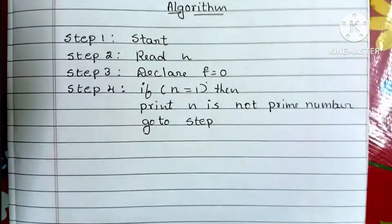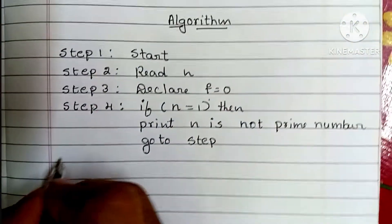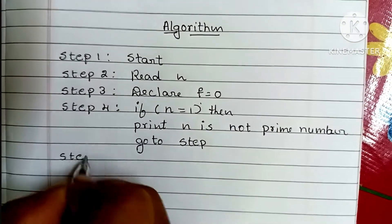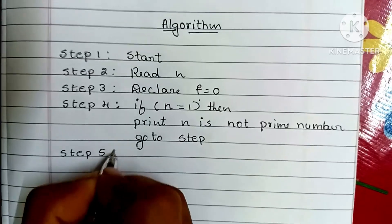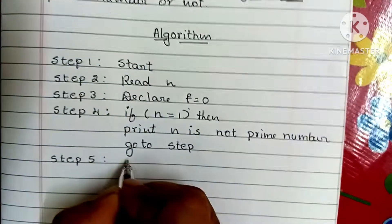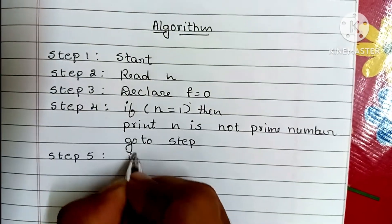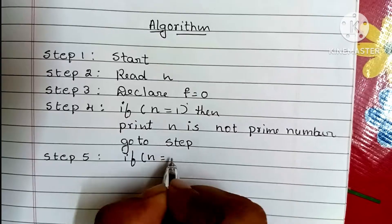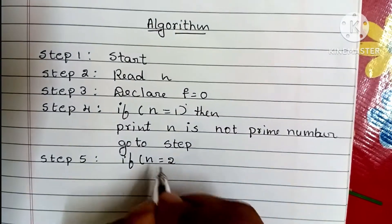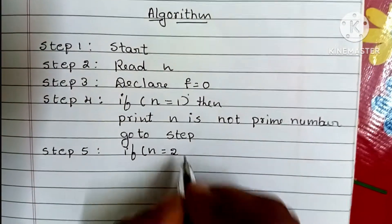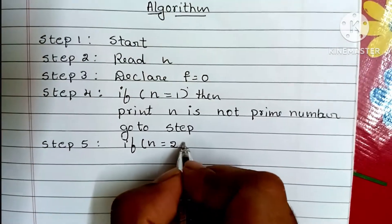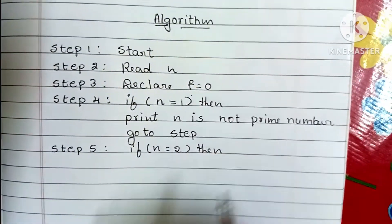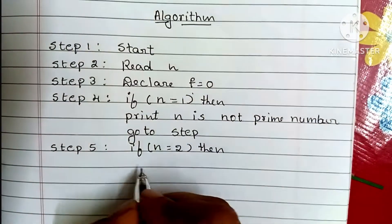Step 5: we know that 2 is the smallest prime number. If N is equal to 2, then we print N is a prime number, because 2 is divisible by 1 and itself only.